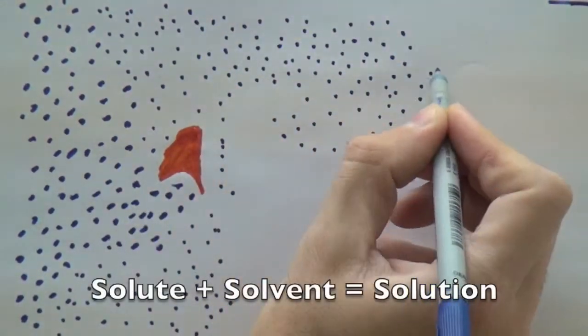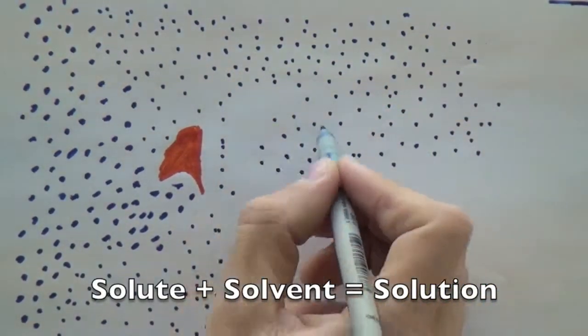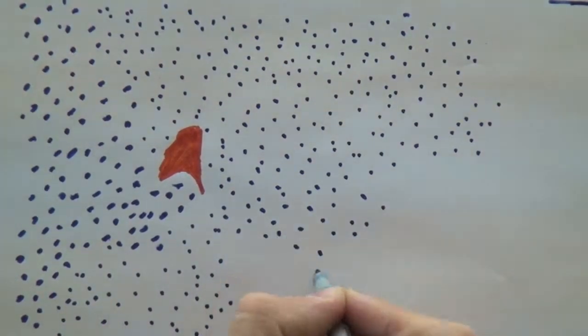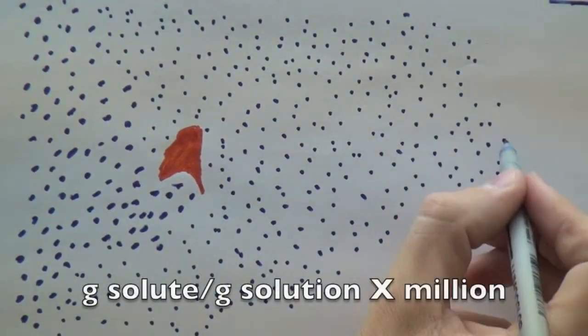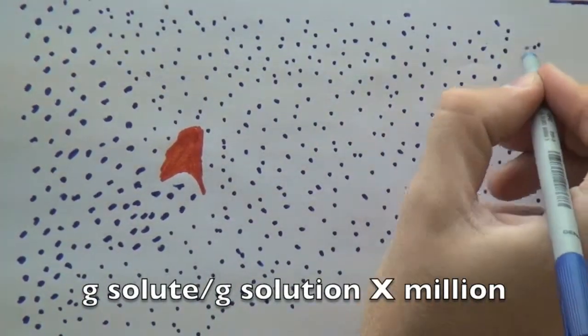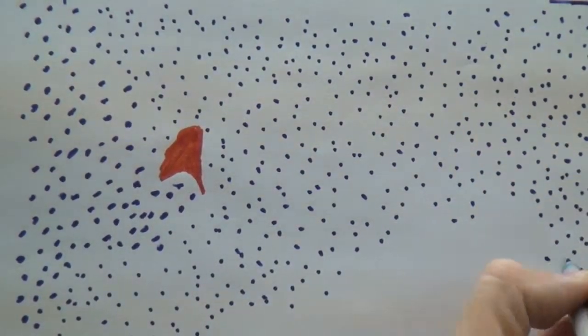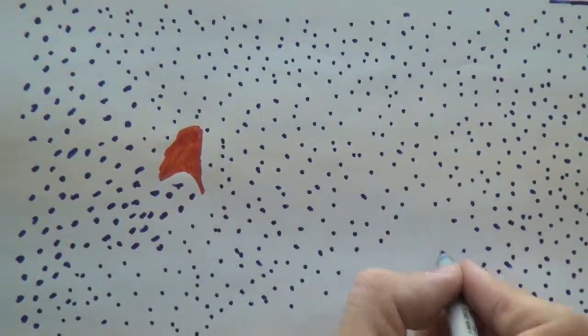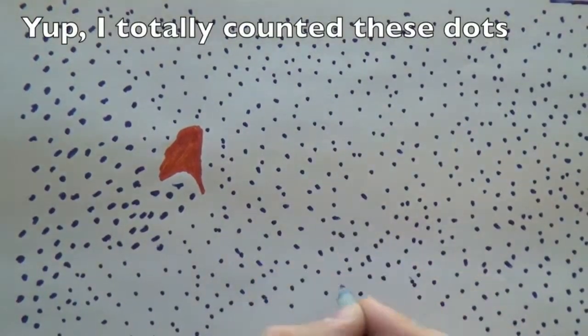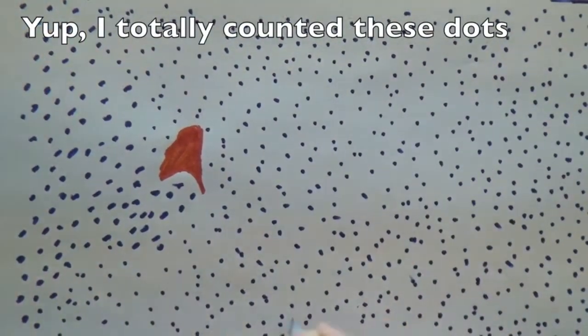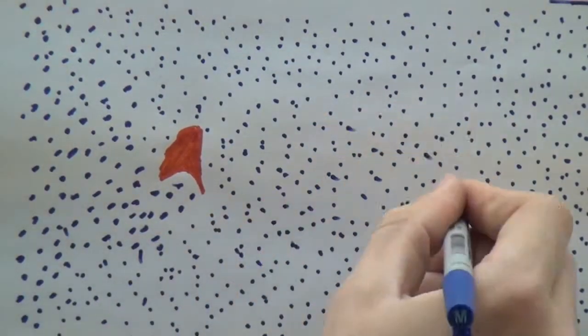You see, a solute plus a solvent will give you a solution, and that's what we need. Remember the formula, grams of solute over grams of solution. So here I have, and I'm almost done, I promise you, I will have one thousand dots here. So I get my thousand dots. That is our solvent.